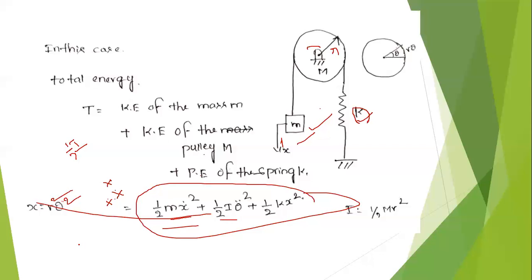We find out Ẋ. Here Ẋ equals R·θ̇. Taking Ẋ² gives Ẋ² = R²·θ̇². So Ẋ² = R²·θ̇². Here I is the mass moment of inertia. From engineering mechanics, the mass moment of inertia for a circle is I = M·R². Here the mass is capital M and the radius is R. Substituting I = M·R², and substituting X = R·θ gives X² = R²·θ².